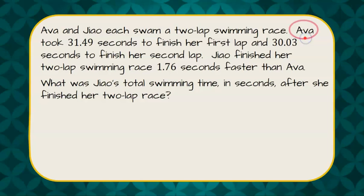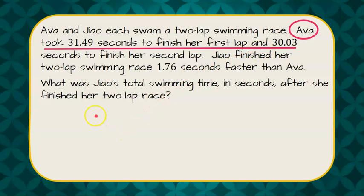So first we are going to identify that we have Ava, who took 31.49 seconds and 30.03 seconds for her two laps. So let's add those together to find her total two-lap swim time.